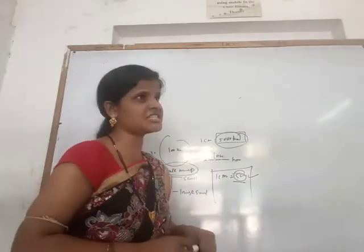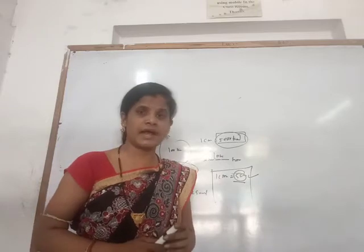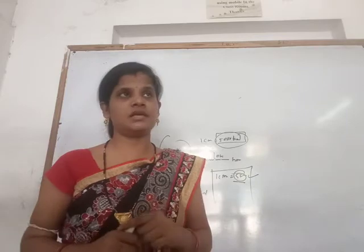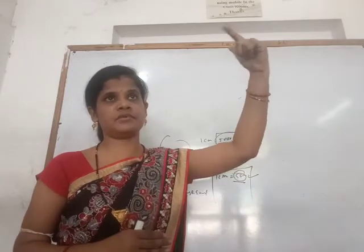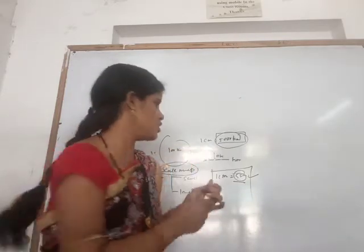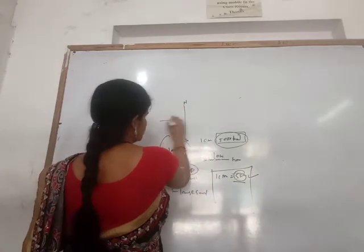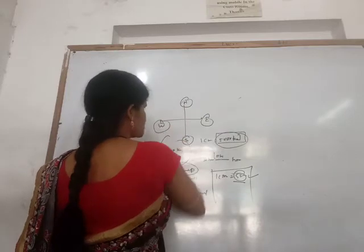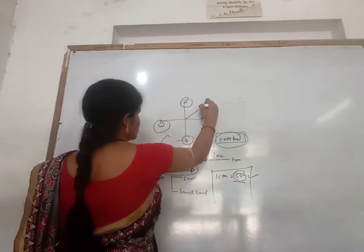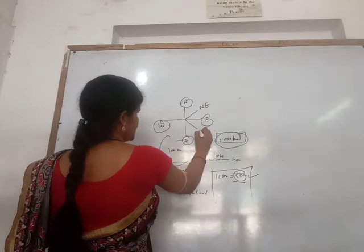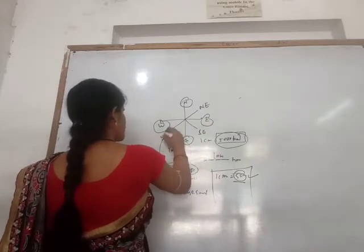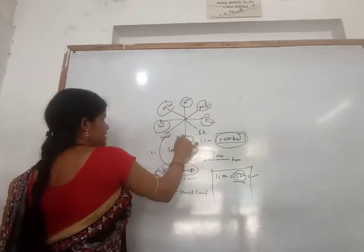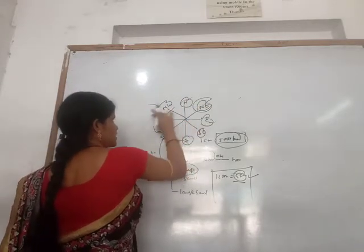Next, we will see the directions. When you study the map, the most important point is the directions. The top of the map is north, the bottom is south, the right is east, and the left is west. These four main directions are called cardinal points. The intermediate directions are north-east, south-east, south-west, and north-west. These are called sub-directions.